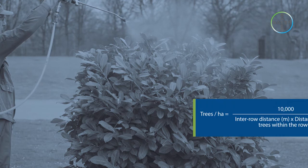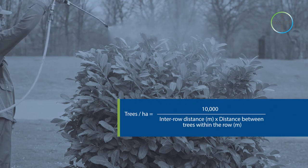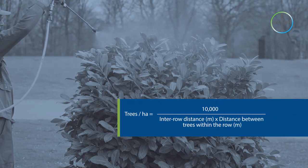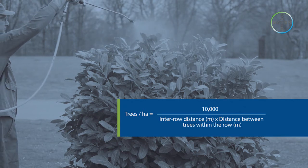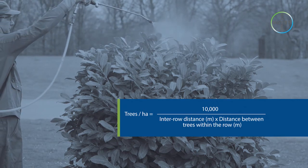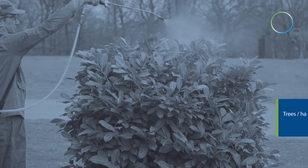Next, we calculate the planting density of the trees. Trees per hectare equals 10,000 over inter-row distance in meters times by distance between trees within the row in meters, both measured trunk to trunk.